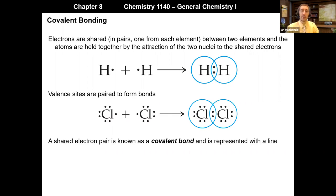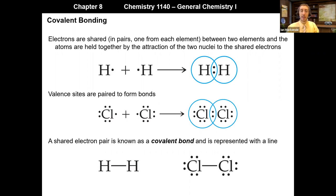A shared pair of electrons between two elements is known as a covalent bond. Rather than writing it as two dots between the two elements, we replace those two dots with a line. So in H2 or Cl2, the bond between the atoms is represented with a line, which is understood to represent two shared electrons.